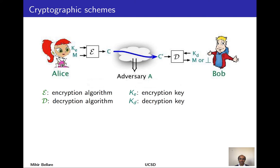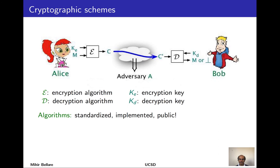When you specify a scheme, you say what constitutes it, and this will be algorithms. There's an encryption algorithm E and a decryption algorithm D. These algorithms have different inputs: the encryption one takes an encryption key ke, while the decryption one takes a decryption key kd. Think of algorithms as public — you can't or don't want to keep the description of an algorithm secret. Algorithms are standardized and implemented widely; on the internet, one expects the adversary can figure out what algorithm you're using.